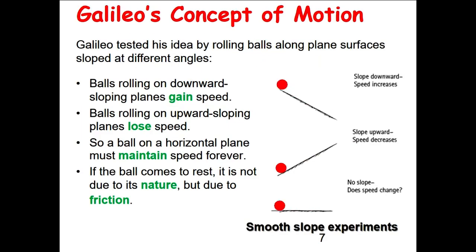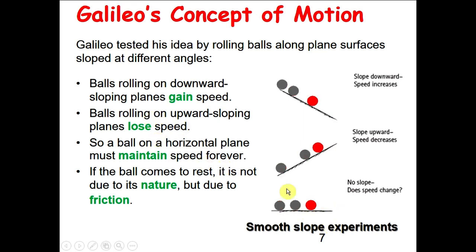Galileo tested his ideas by rolling balls along plane surfaces sloped at different angles. He found that a ball rolling down a slope will gain speed as it goes down. However, if the ball is rolling upward on a slope, it would slow down and lose its speed. What happens if the ball is set to move on a smooth horizontal plane? According to Galileo, the ball will maintain its speed forever and never come to rest. If the ball does come to rest, it's not due to its nature, but must be due to something else like friction.